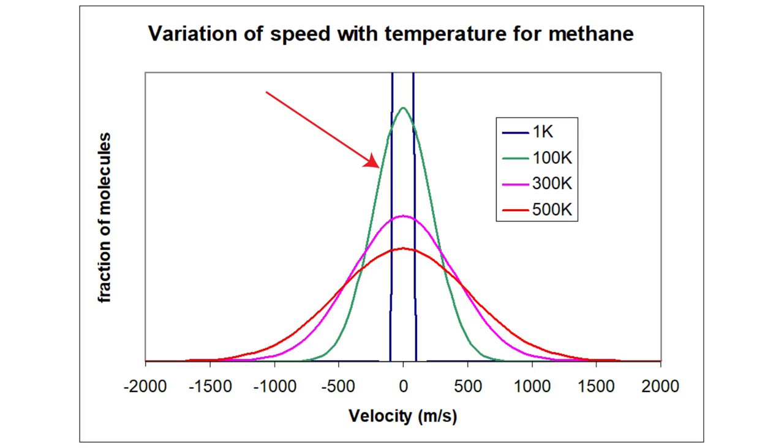Meanwhile, as the temperature decreases, the distribution gets narrower, so the velocities tend to cluster closer to 0 meters per second. This, too, makes sense. As the temperature decreases, the molecules move more slowly. At a temperature of absolute zero, the molecules should all theoretically stop moving, so the distribution would simply be a vertical line at zero.